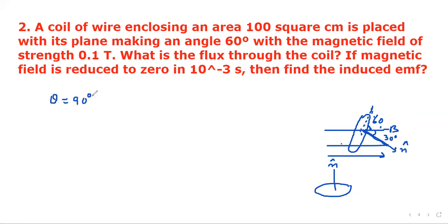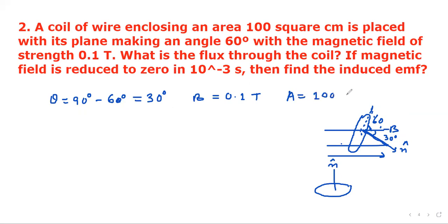So theta = 90° − 60° = 30°. We always take theta as the angle that the normal drawn on the area makes with the magnetic field, and not the angle that the area itself makes with the magnetic field. That is why the angles are different.